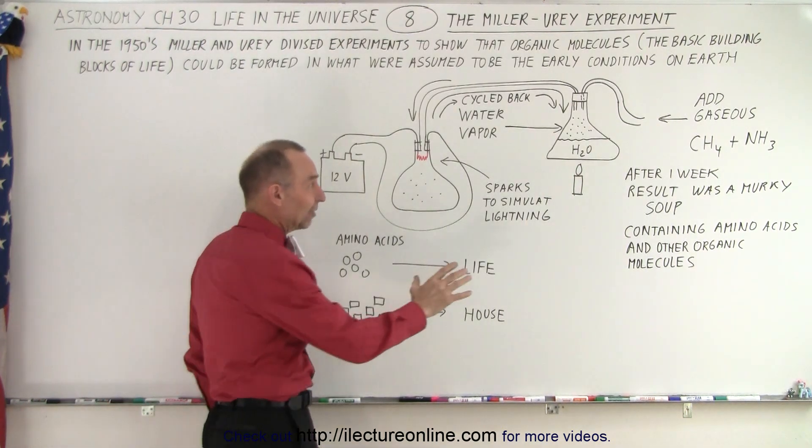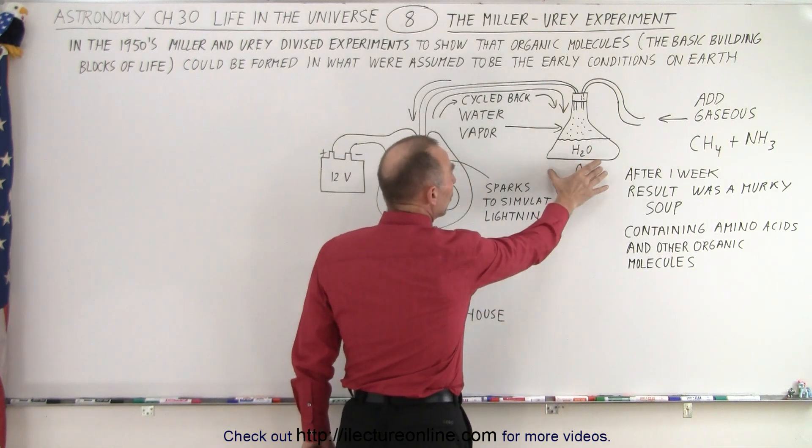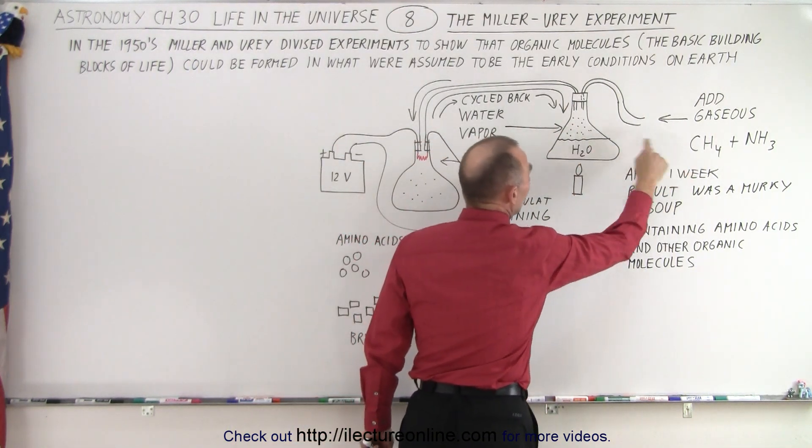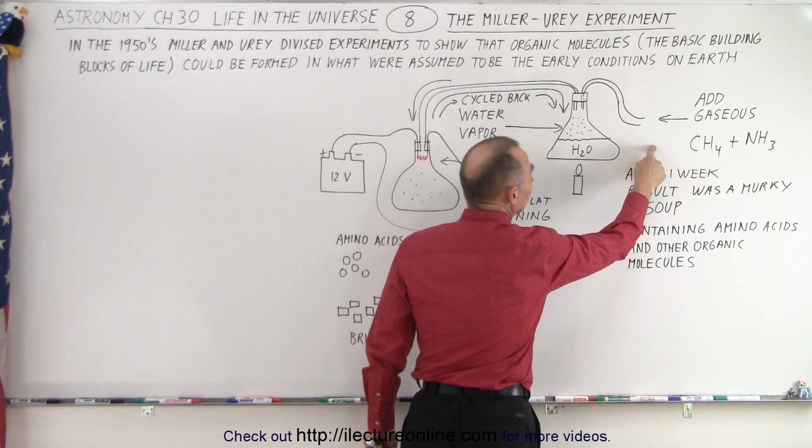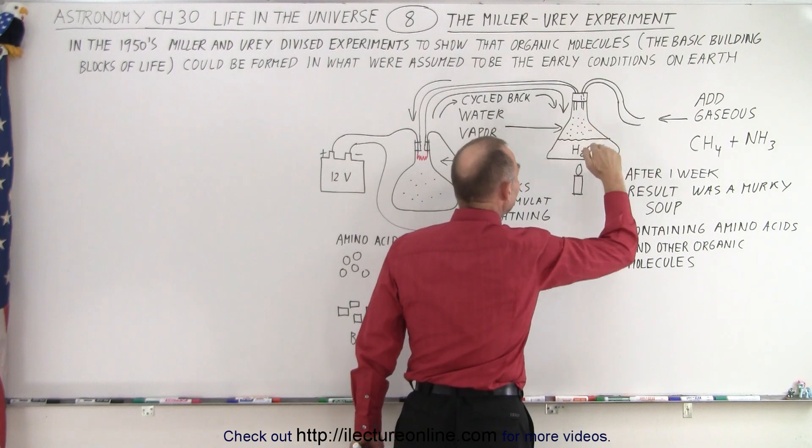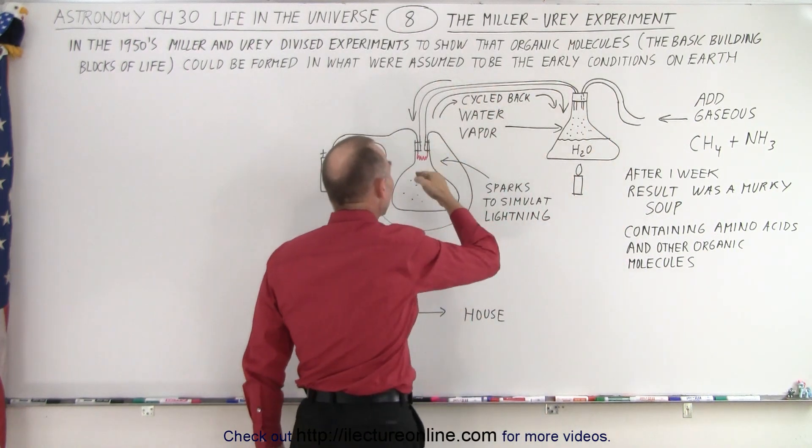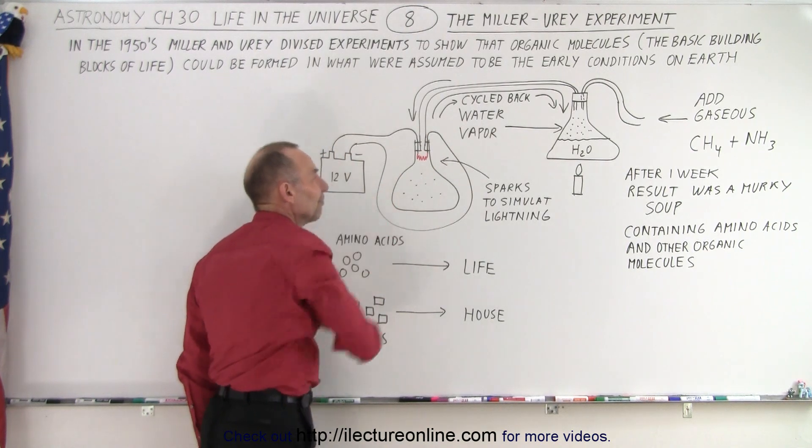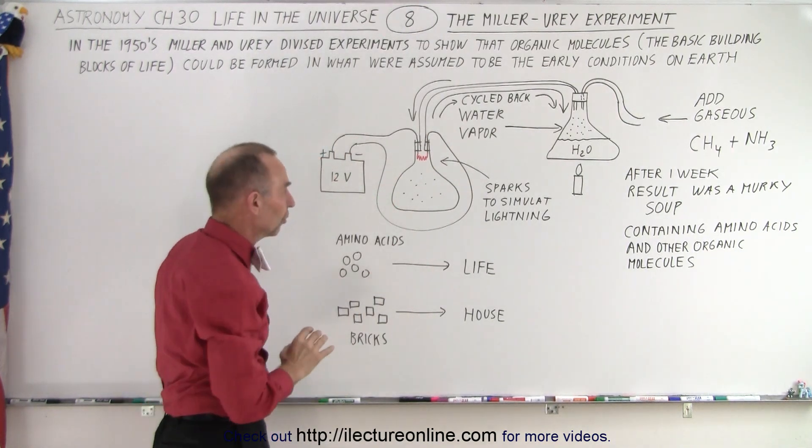So what he did was he had a flask where he heated the water inside the flask to produce water vapor. He then mixed the water vapor with added gaseous methane and ammonia. He would mix all that and that was driven then into another flask where inside the flask we had sparks produced via a battery or power source.